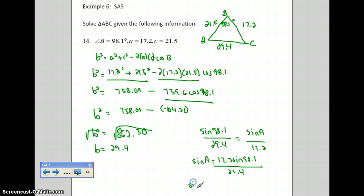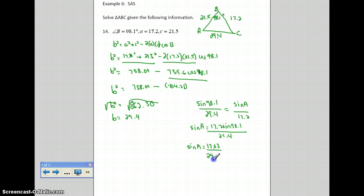What does that turn out to be? That's sine of A equals 17.03 over 29.4, which is the same thing as sine of A equals 0.5793. And then if I take the sine inverse of both sides, I get angle A to equal 35.4 degrees.